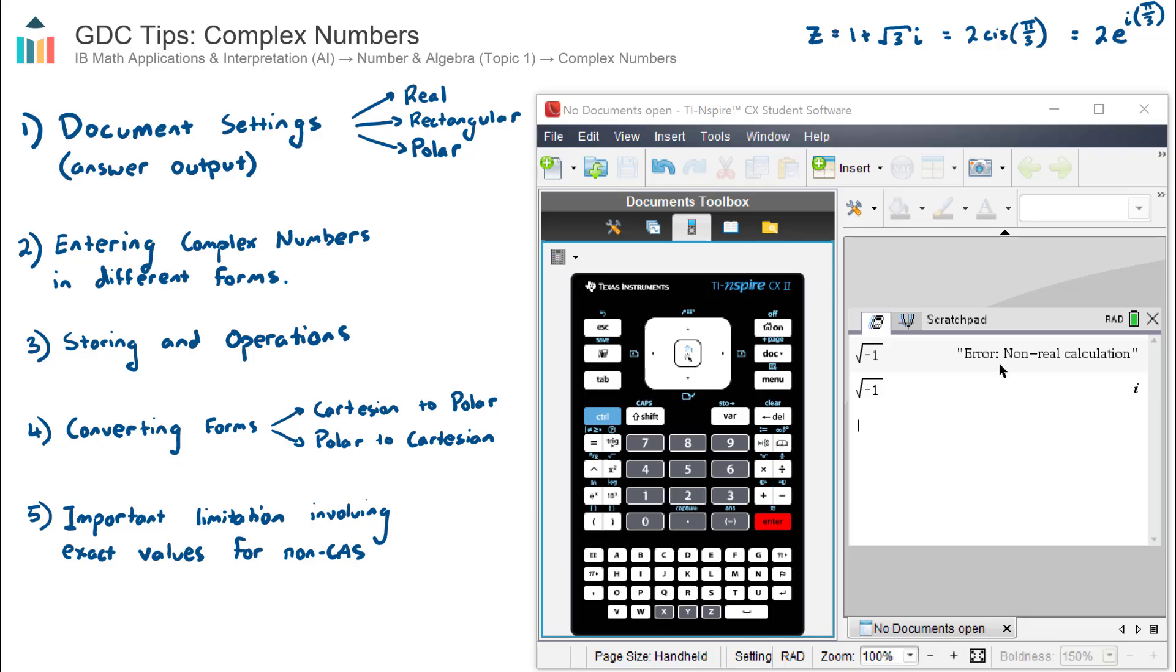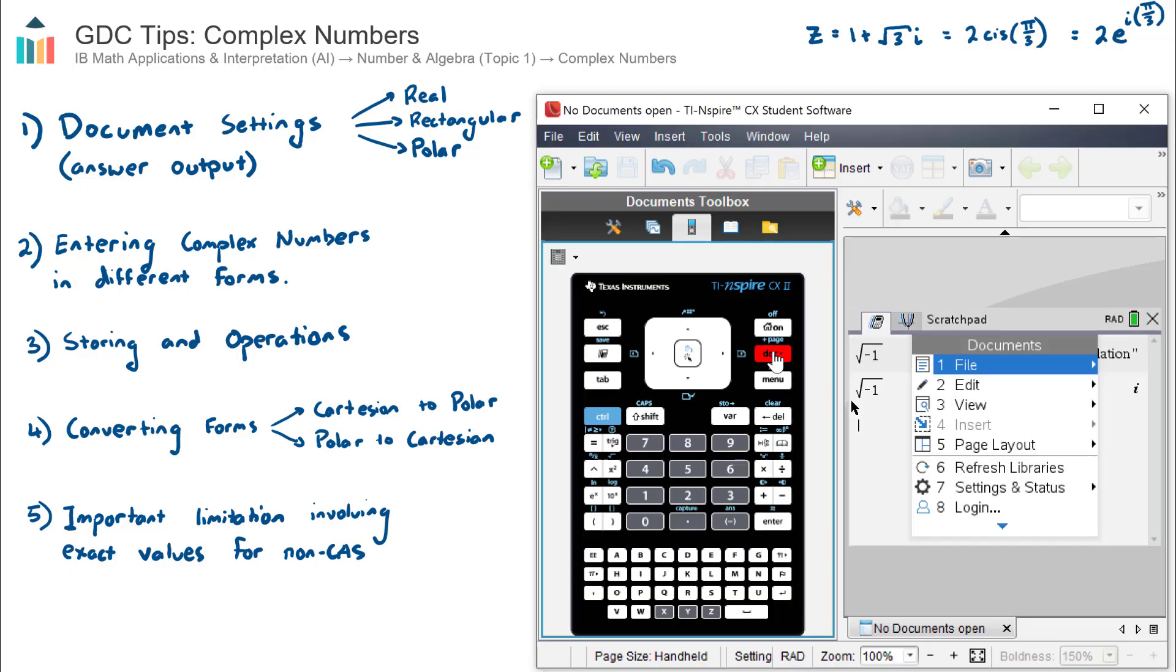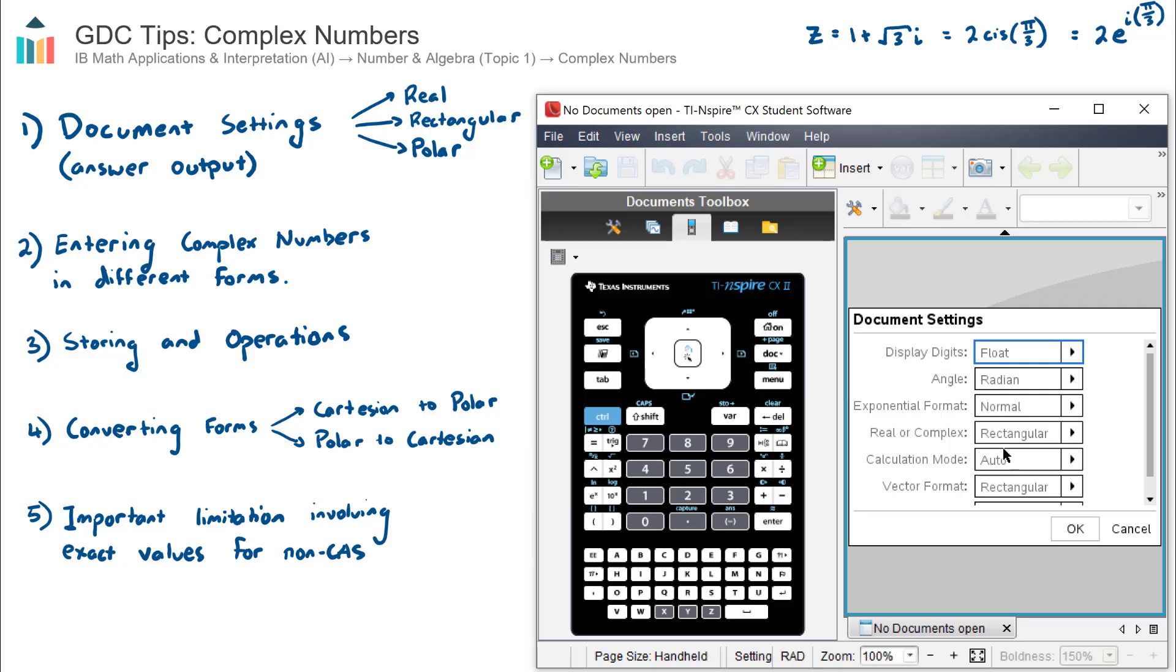So I have demonstrated there that the calculator, you need to tell the calculator that you're dealing with complex numbers to get a certain output. Now if I go back into that area, number seven, settings and status, number two, document settings, this option here is all about how do you want your calculator to output your answer. So if you want it to be outputted in Cartesian form, you'd select rectangular. If you want it to be output in polar form, then you would need to do polar form. So let's just do polar form here, hit OK.